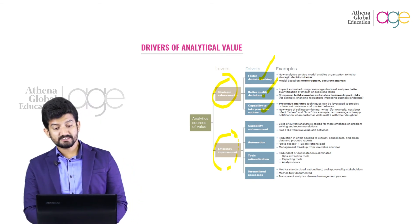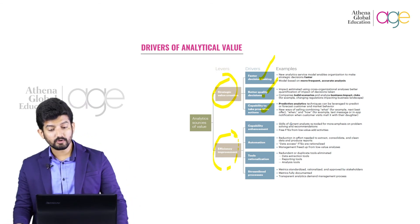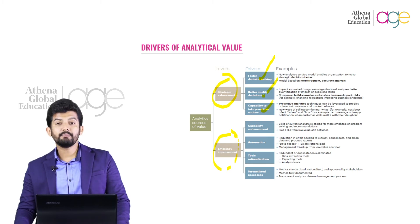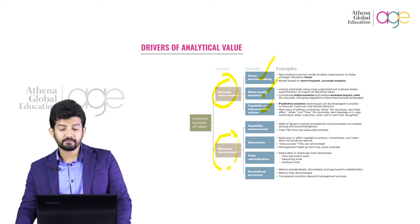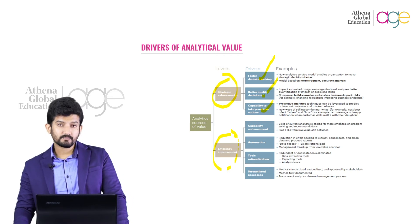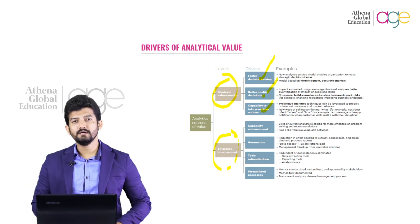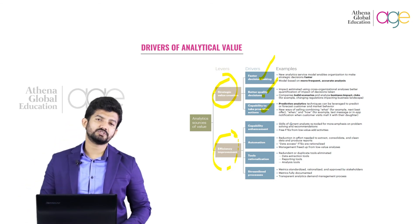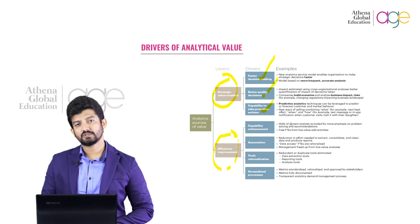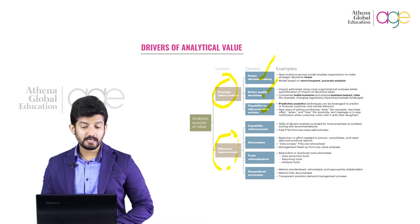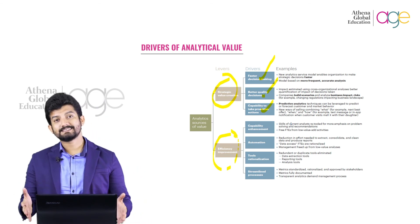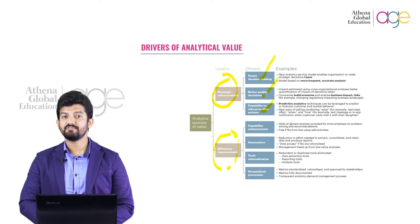For better quality decisions, impact is estimated using cross-organizational analysis, with better quantification of the impact of decisions taken. Companies build scenarios and analyze business impact risks — for example, changing regulations impacting the business landscape. What we are trying to do is understand the external factors which can impact your organization, so you can cope with such problems with better quality decisions, without hampering your existing processes.